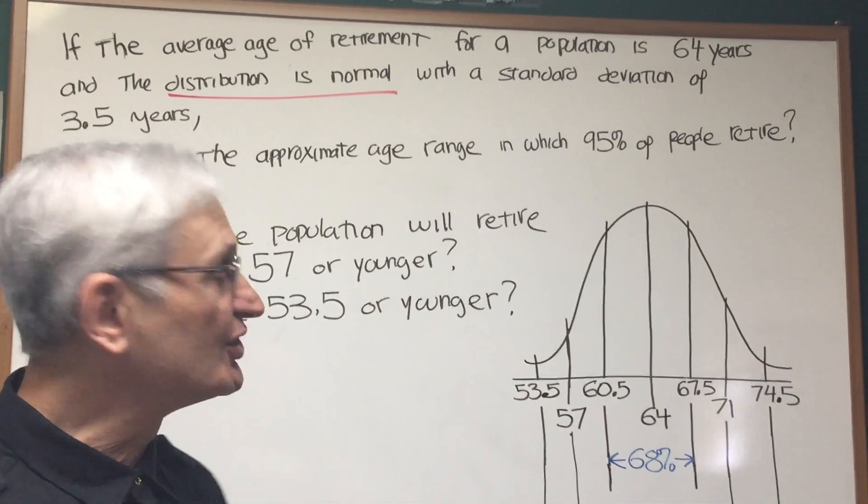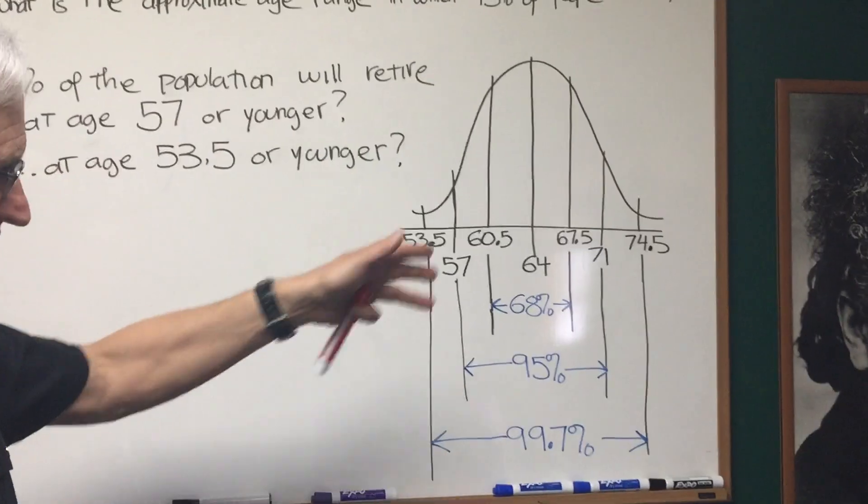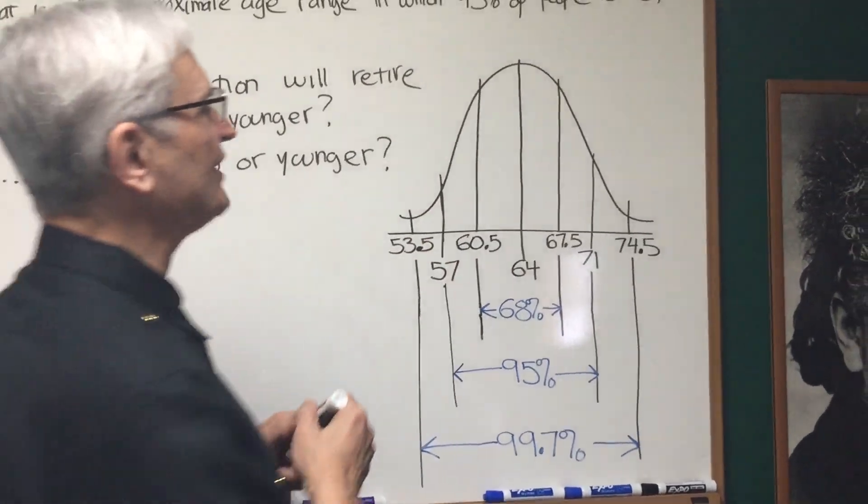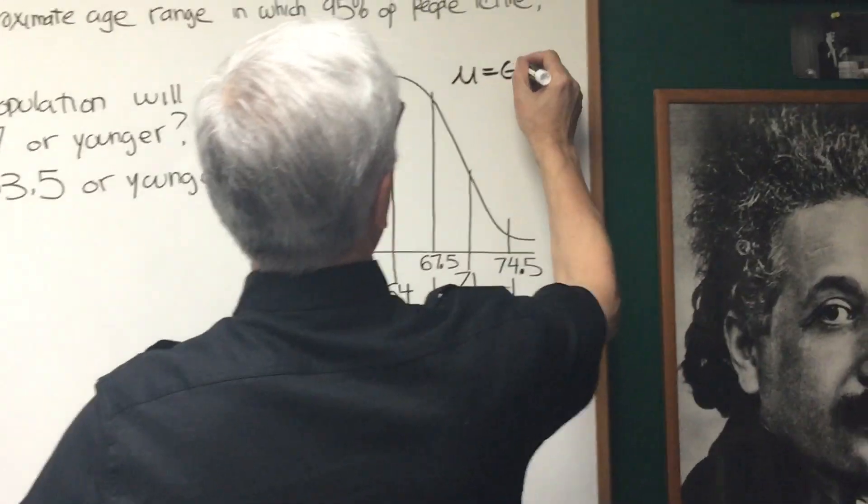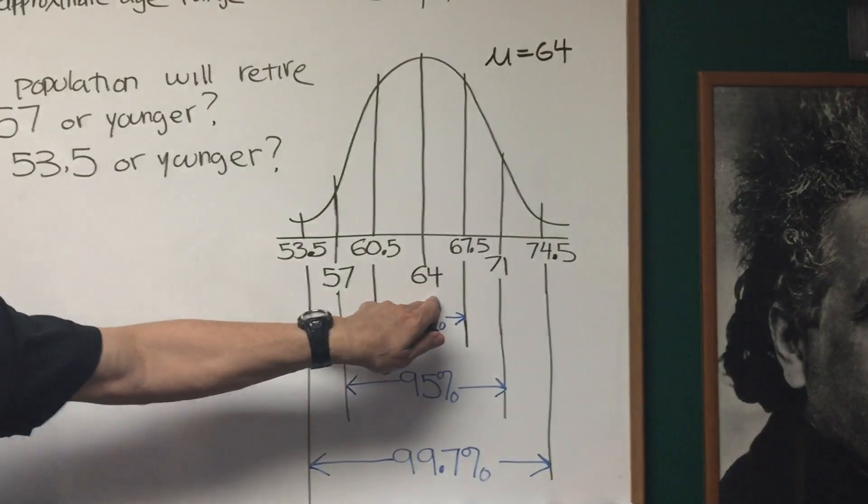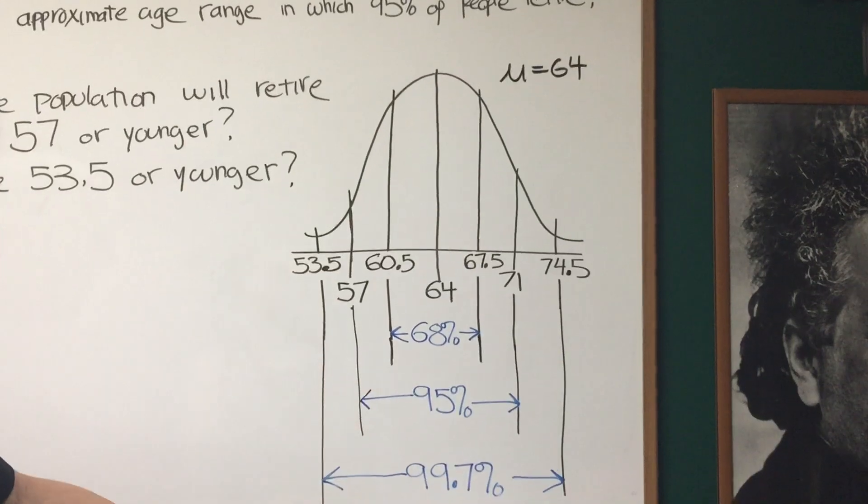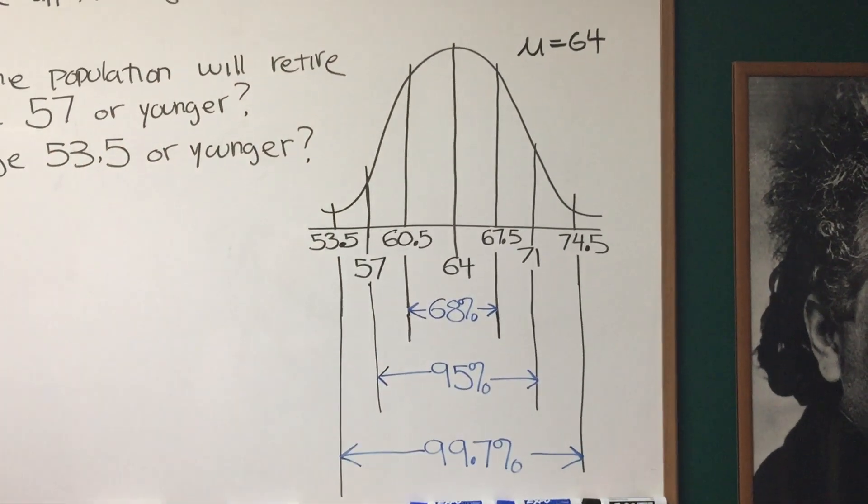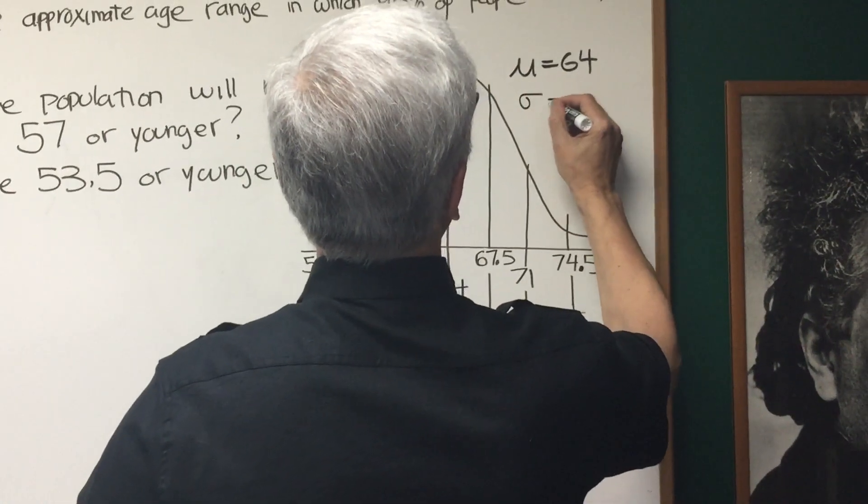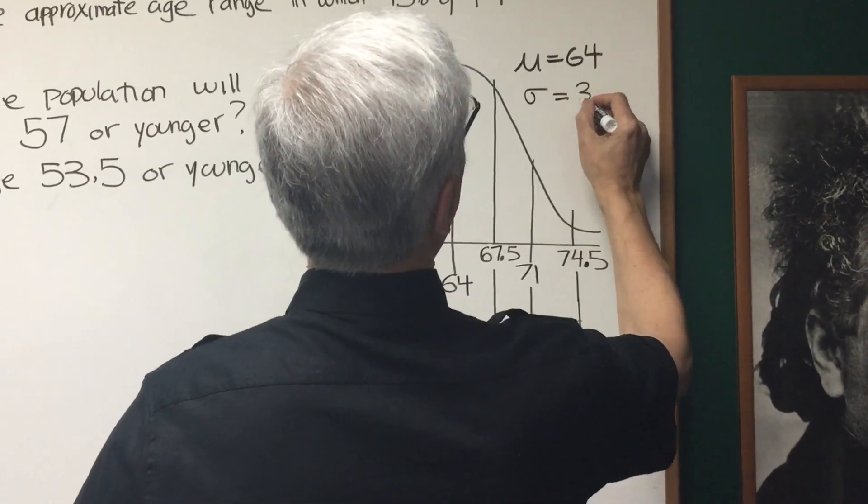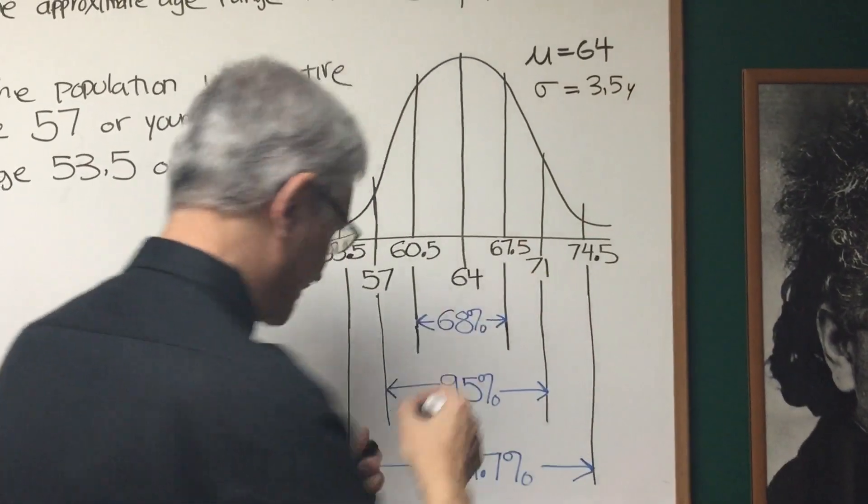Two values determine the shape and the specific subdivisions of the standard normal curve. The mean, which in this case is 64, that's the score right in the middle that divides the standard normal curve right in half. It is symmetrically distributed. The other statistic is the standard deviation, which is 3.5 years.